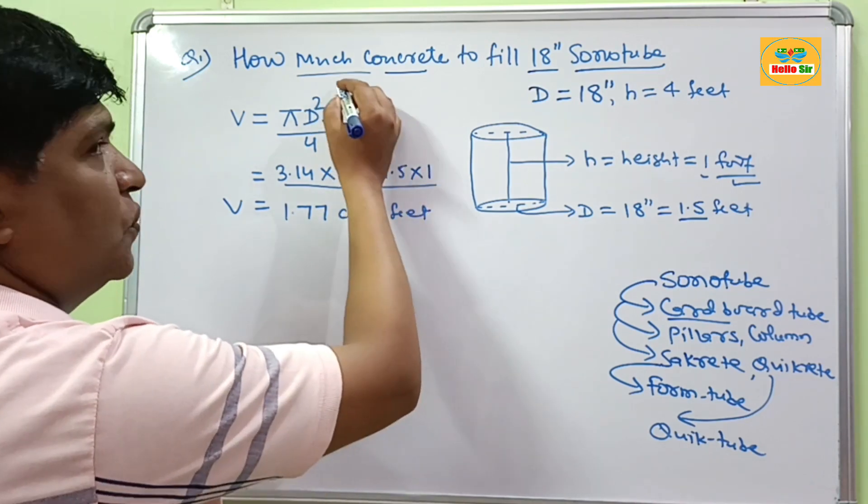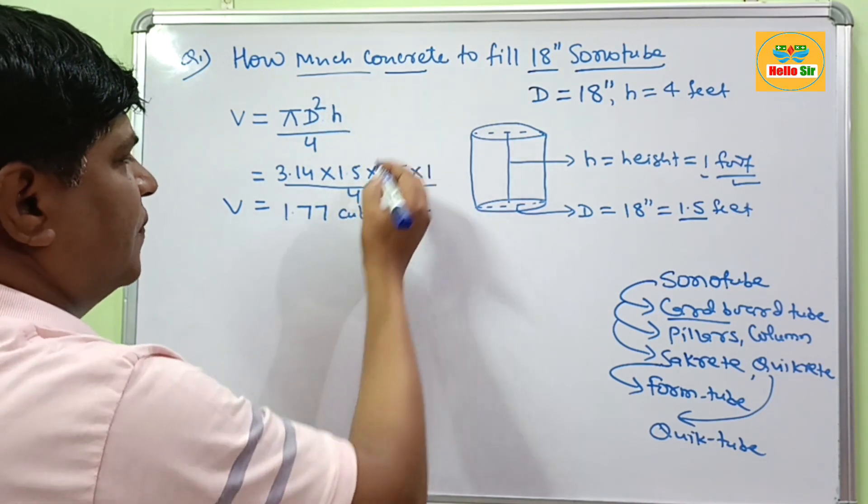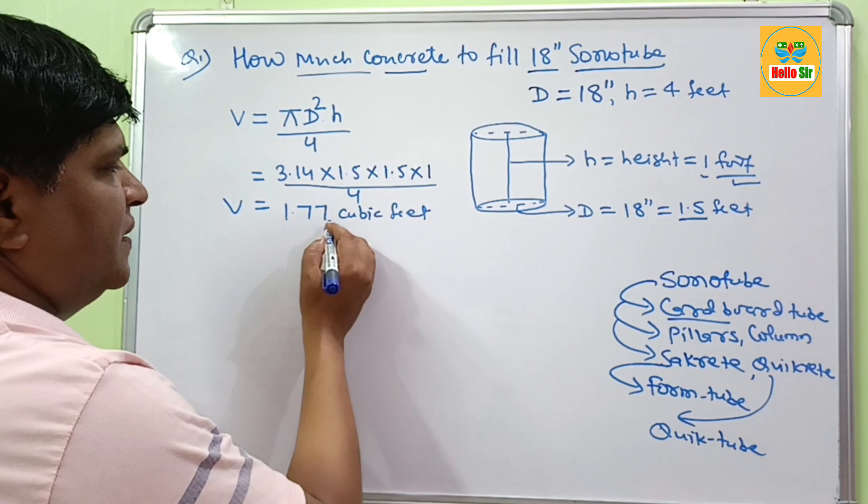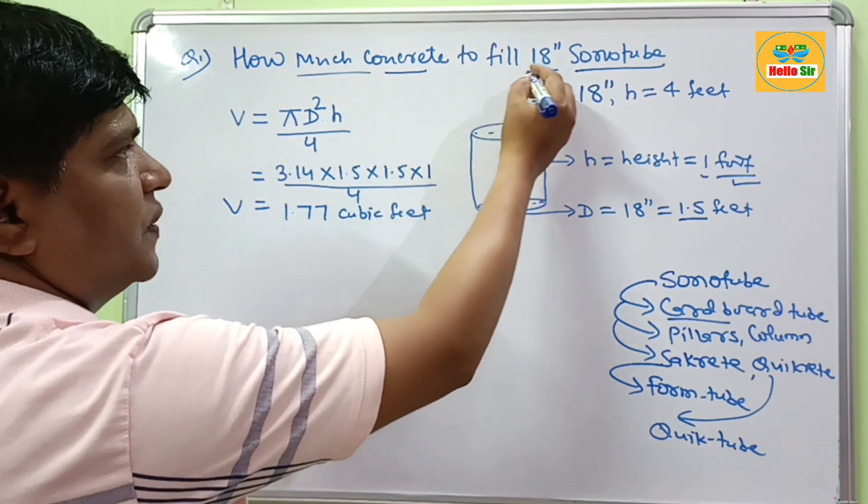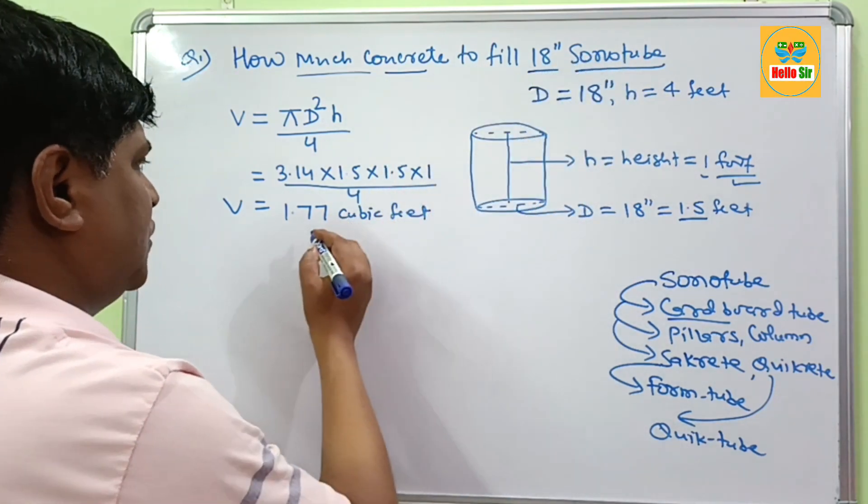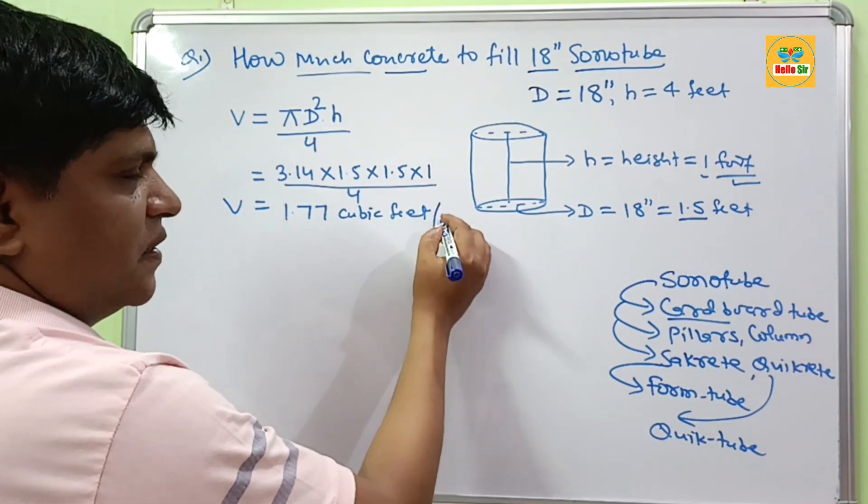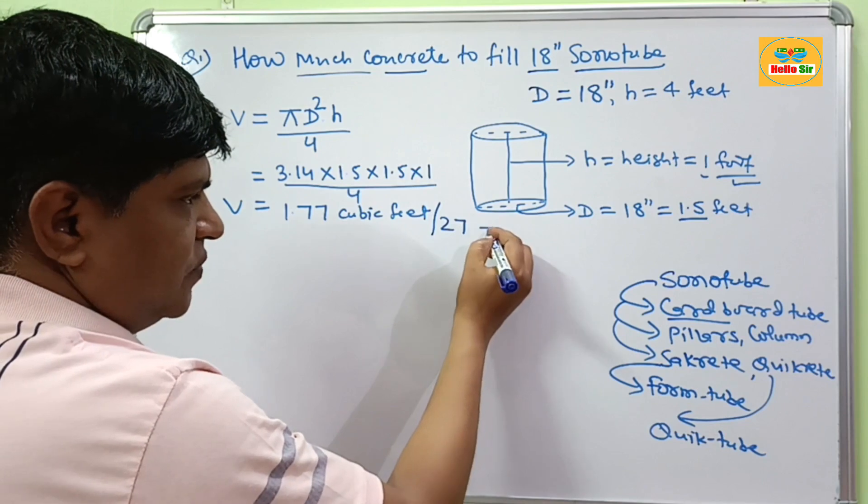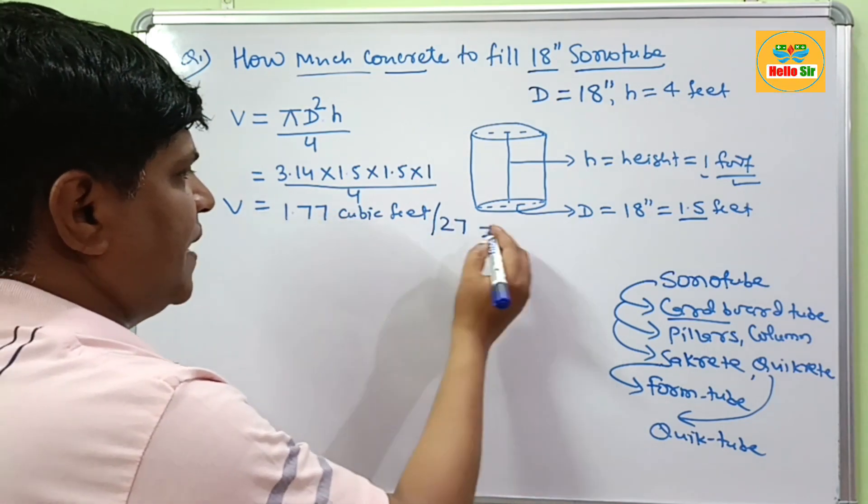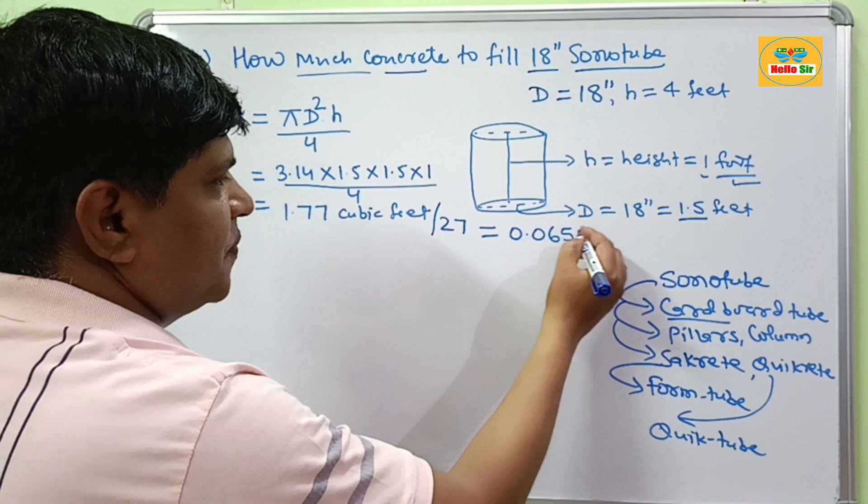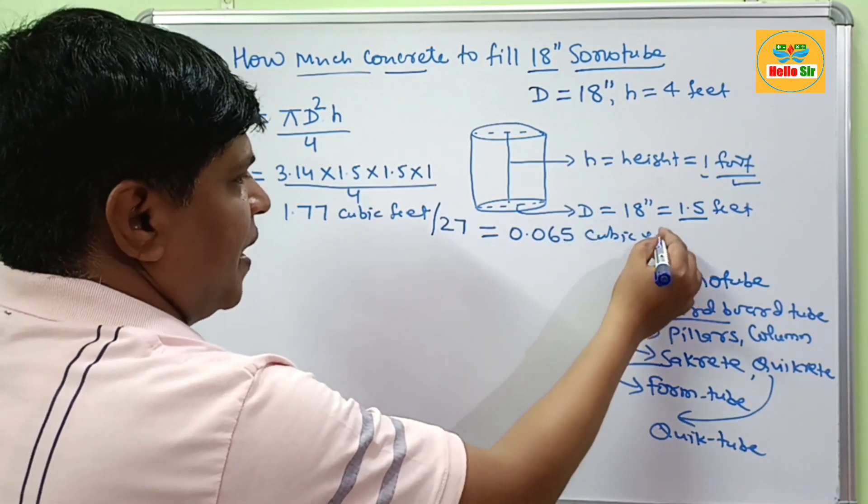And your question is how much concrete is required? You need about 1.77 cubic feet concrete to fill 18 inch sonotubes. And if you want to measure the concrete in cubic yards, then you will divide this by 27. This will come about 0.065 cubic yards.